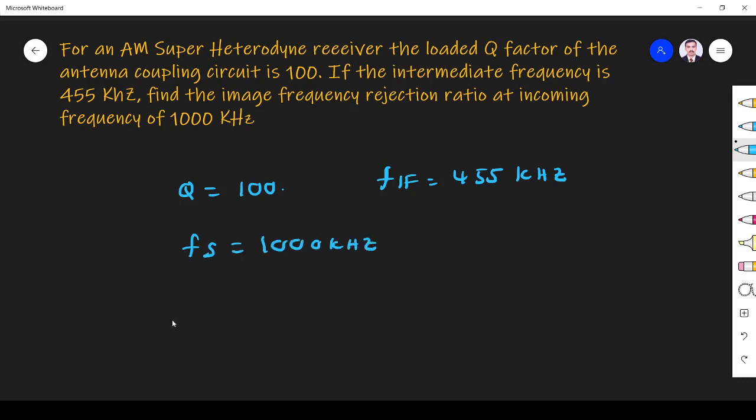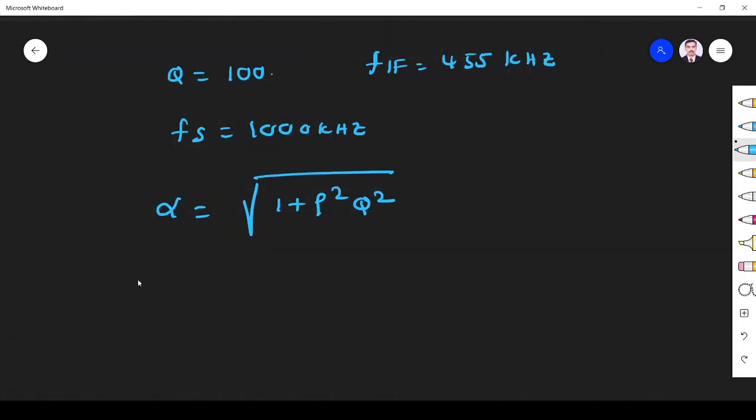So what I have to find is image frequency rejection ratio alpha. Alpha is given by square root of 1 plus rho squared Q squared. Q we know. What is rho? Rho equals f_image by f_s minus f_s by f_image.